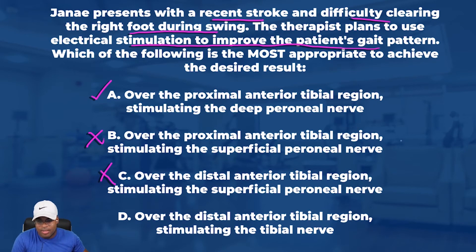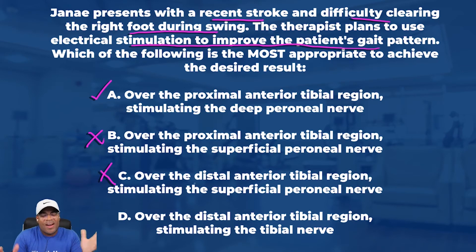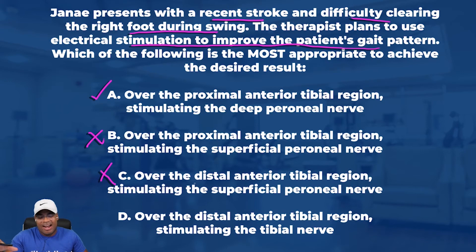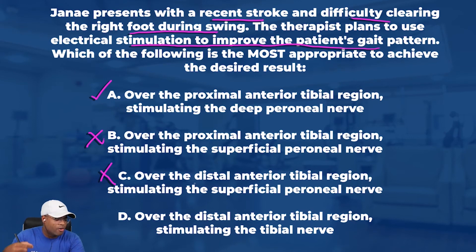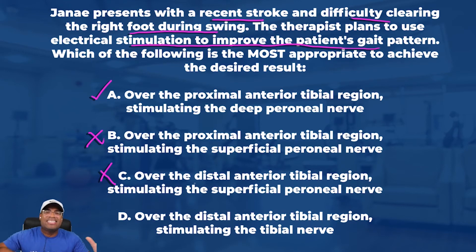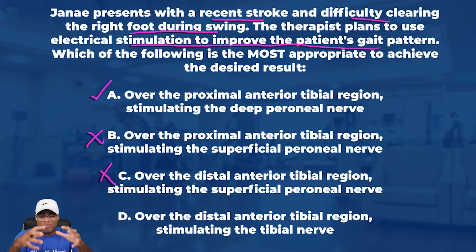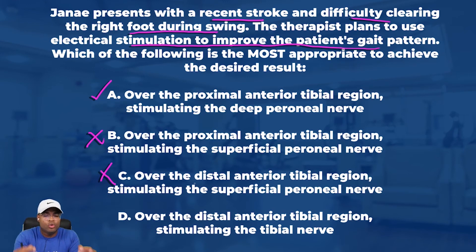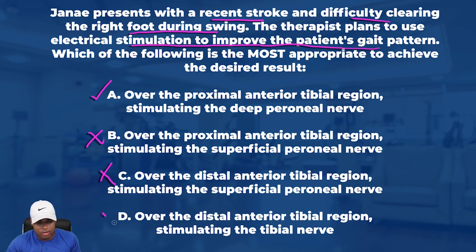Answer D says over the distal anterior tibial region stimulating the tibial nerve. First, I know I don't want to be in that distal region — I need to be in the proximal area. And the tibial nerve innervates the major plantarflexors: your gastroc, your soleus, all of that. If we stimulate those plantarflexor muscles, it's going to create more plantarflexion, and the person is not going to be able to clear the foot. Therefore D is not the correct answer.